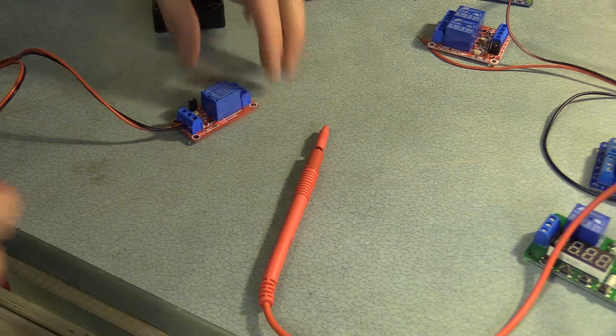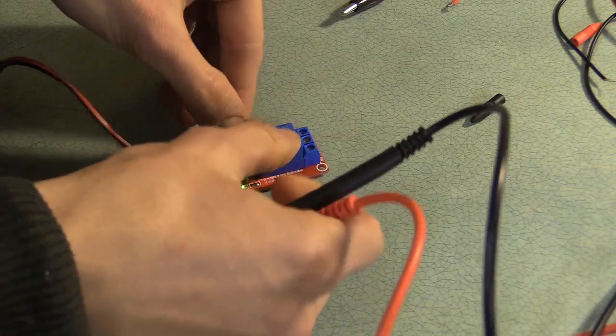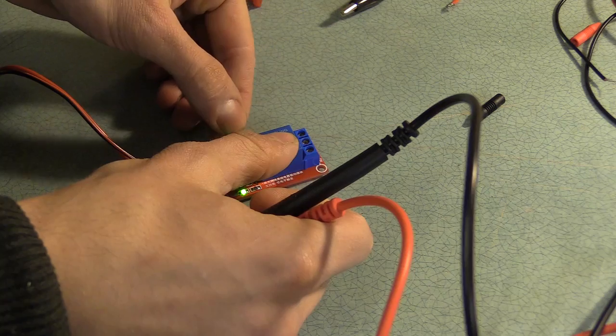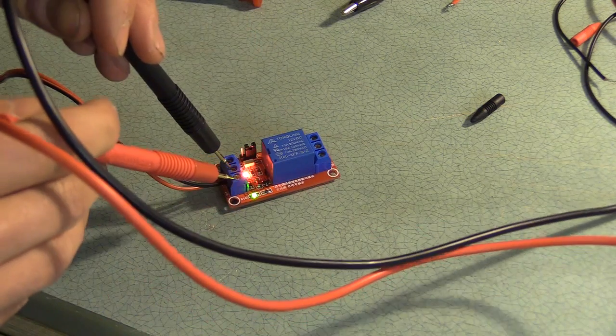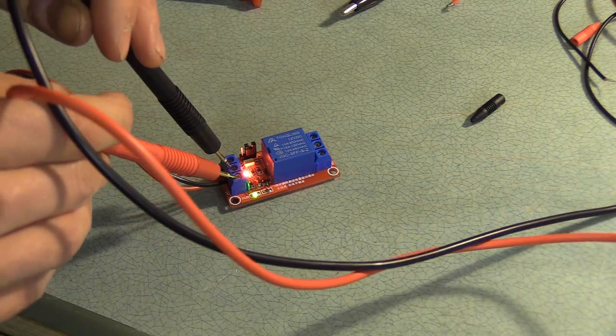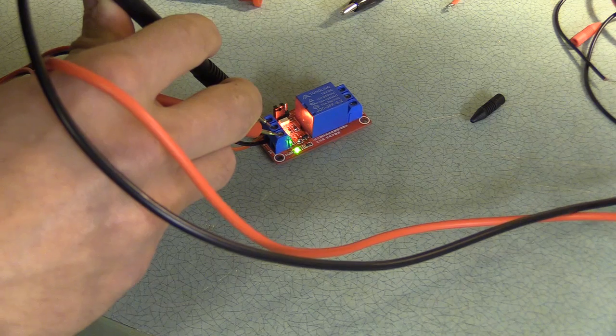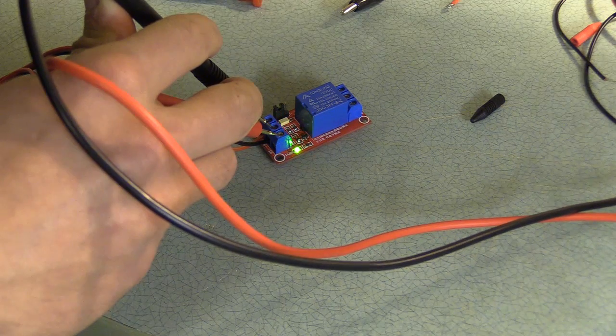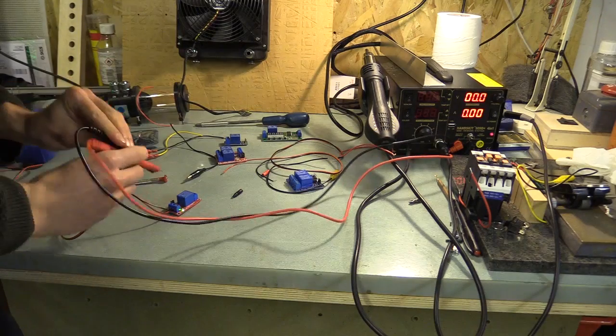I still decided to test the relays by connecting their power inputs to the relevant power supply units in the enclosure, and using my soldering station's DC power output mode to adjust the voltage until the relays were triggered. I'm checking whether the relays turn on and off when I expect them to, and what voltage I would need.